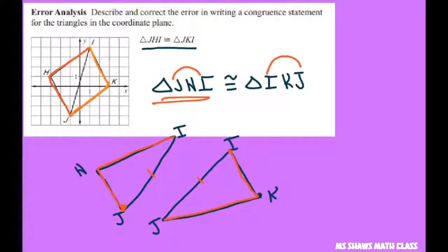And that way the vertices match up. So in this case, J goes with I, H goes with K, and I goes with J.